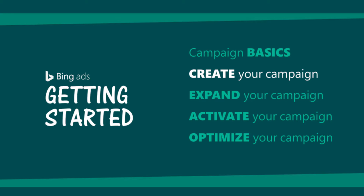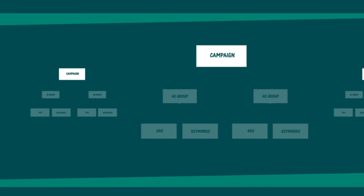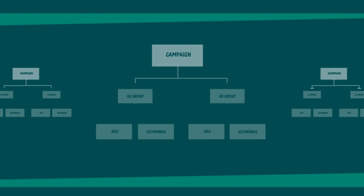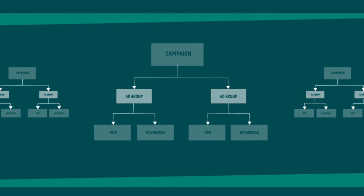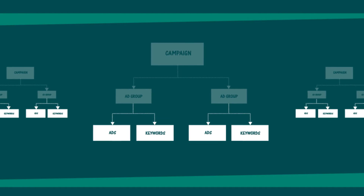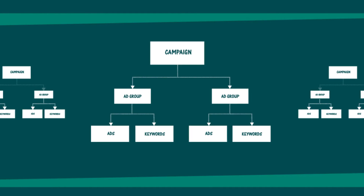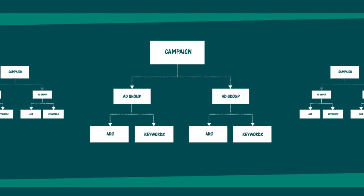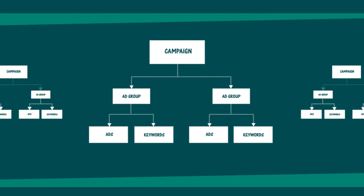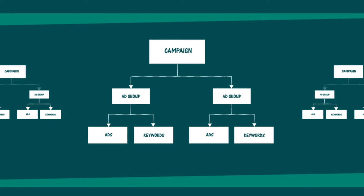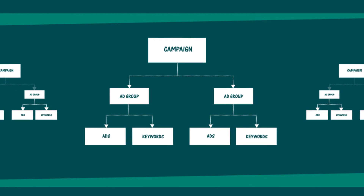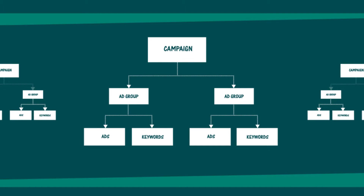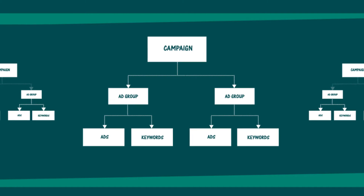First, a quick note about how campaigns are structured. A campaign is simply a container for related ad groups, which contain relevant ads and keywords. Your account can have multiple campaigns, which can contain multiple ad groups. You'll learn more about the importance of this structure as you go through these videos.